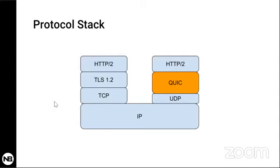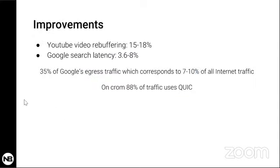But let's see how much of an improvement that is. Google is the main driver and major user of QUIC at this point. According to their measurements, with QUIC they have managed to reduce YouTube video rebuffering by 15% to 18%, and Google search latency by 3.6% to 8%.